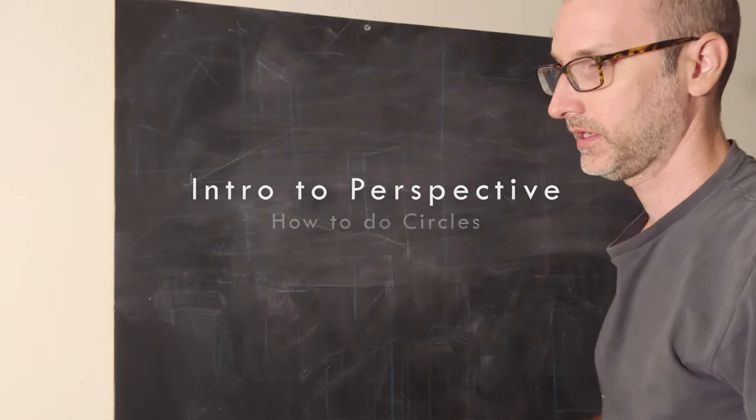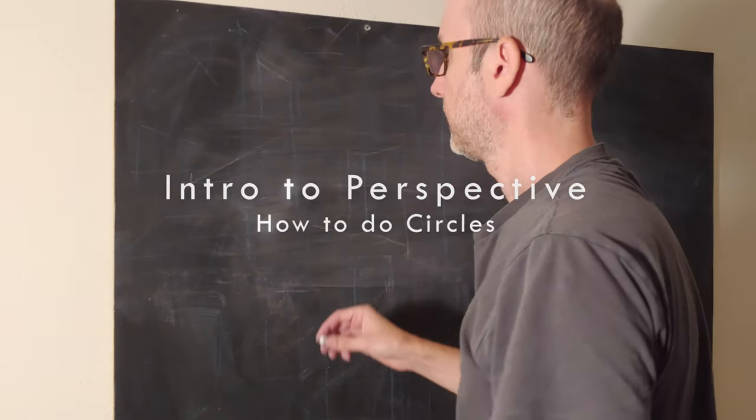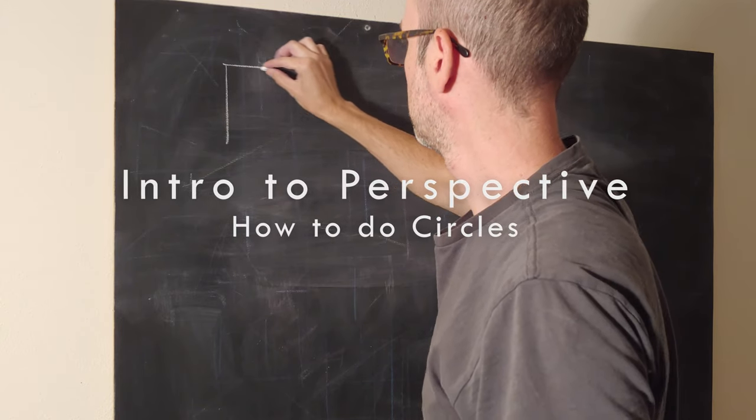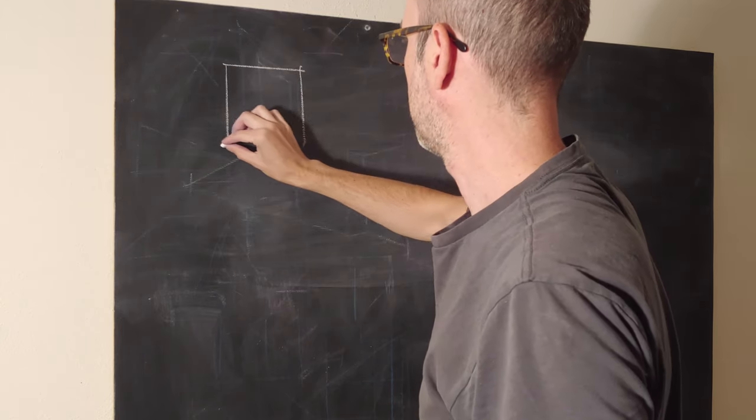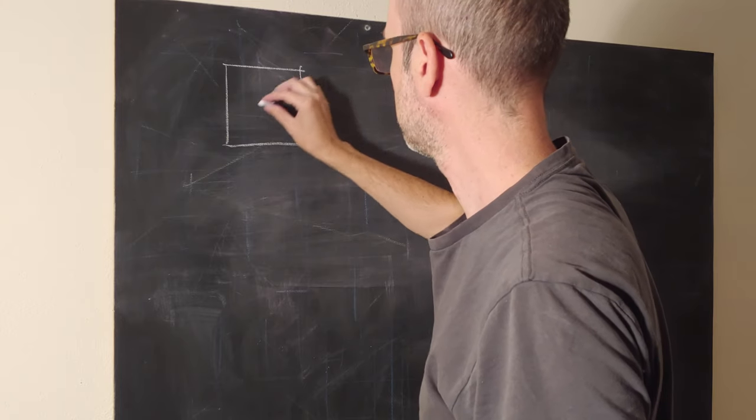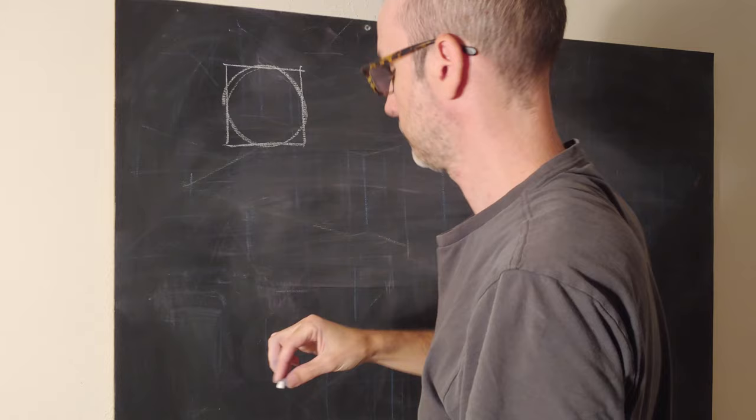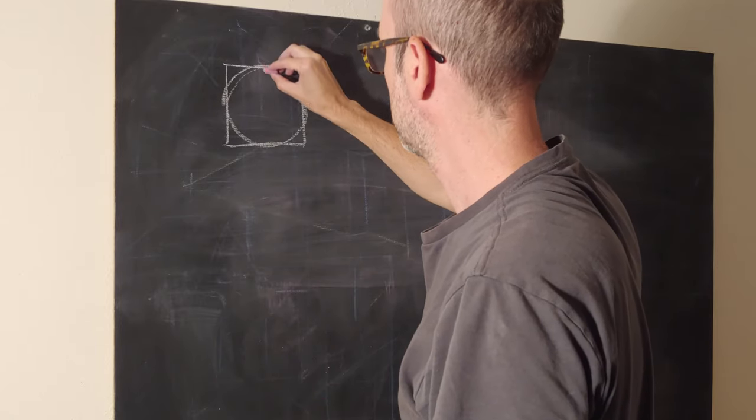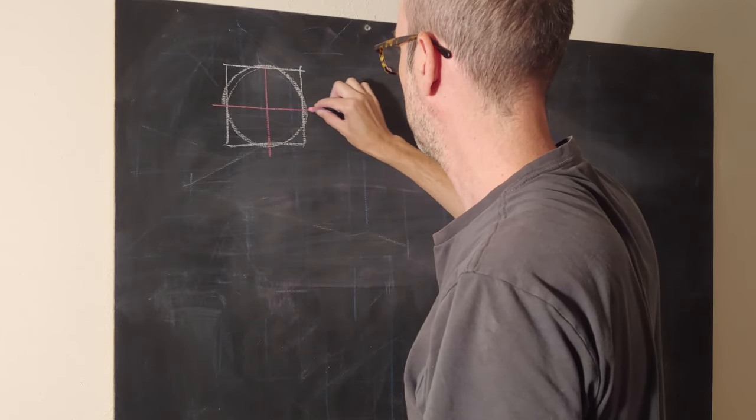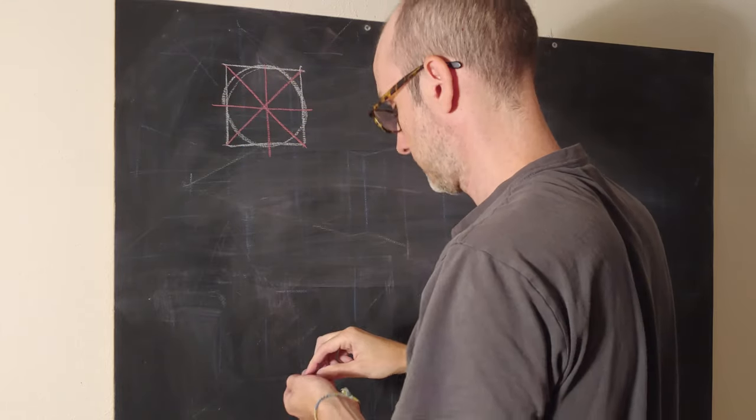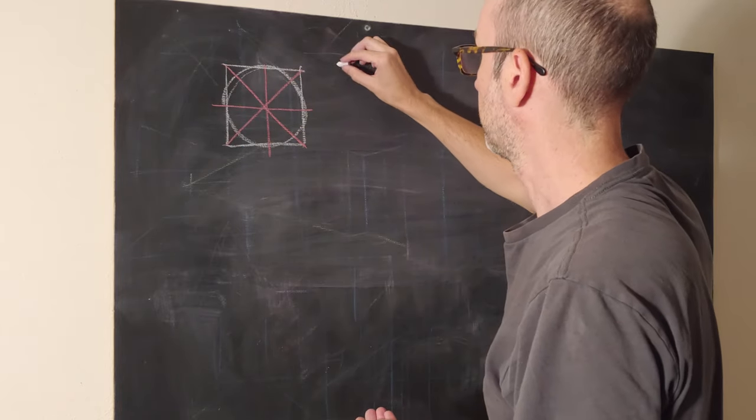One of the biggest problems in linear perspective is circles. Normally what we would do is take our shape, which happens to be perfectly symmetrical in four quadrants, then we would do our X method subdivision and translate that over.